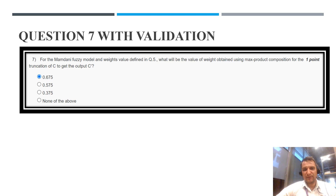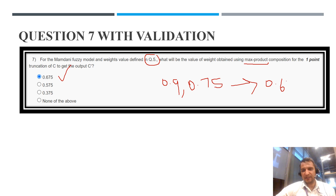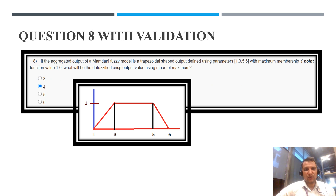Question number 7: same as question number 5, but using max-product. The values from question 5 are W1 = 0.9 and W2 = 0.75. We multiply both: 0.9 × 0.75 = 0.675. Then we take the maximum — since there is only a single value, the answer is 0.675.